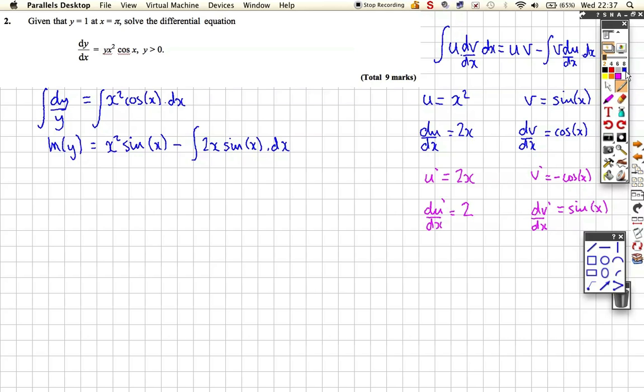So let's just be a little bit careful here. So we get, we've got the ln y, and we've got the x squared sine x, and then we're going to take away, and I'm going to put it in brackets, so I don't get anything confused. And then, well, let's do this integration by parts.